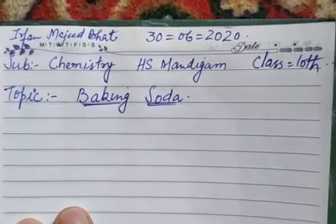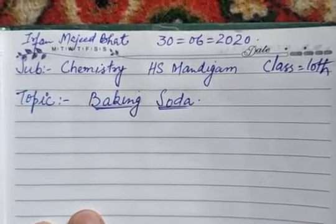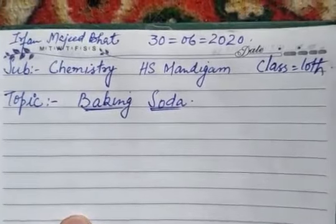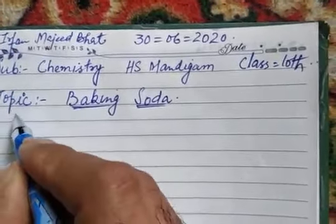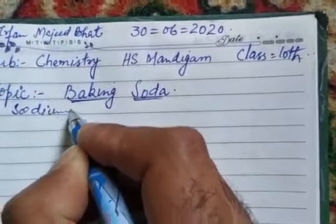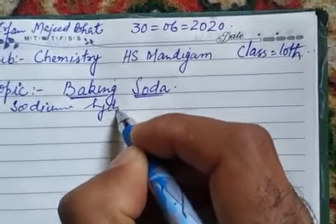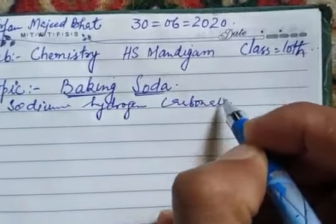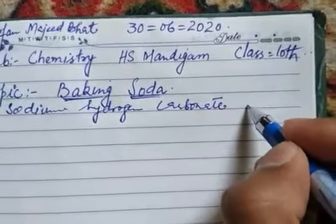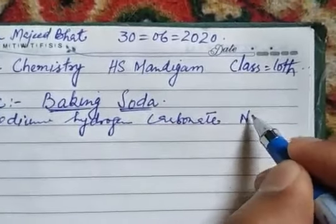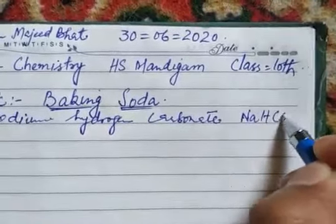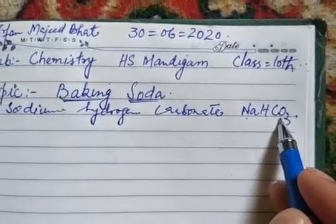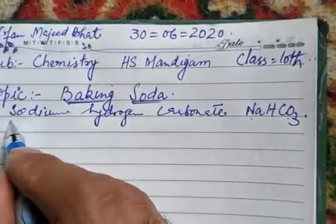Students, today we will learn about baking soda. Baking soda, chemically, is sodium hydrogen carbonate and its formula is NaHCO3. It is also called sodium bicarbonate.